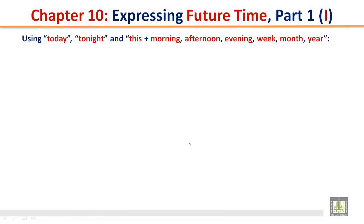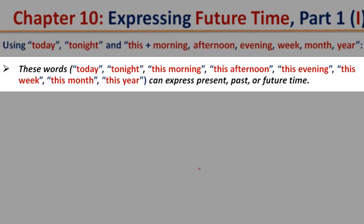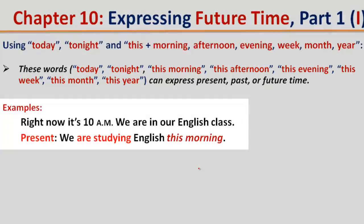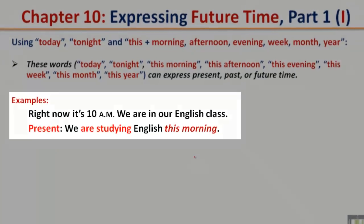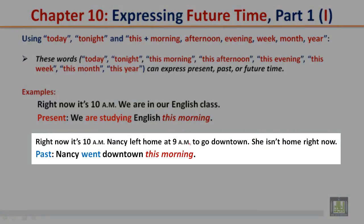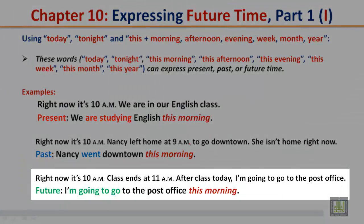Using today, tonight, and this plus morning, afternoon, evening, week, month, or year. These words — today, tonight, this morning, this afternoon, this evening, this week, this month, this year — can express present, past, or future time. Present example (it's 10 a.m.): We are studying English this morning. Past example: Nancy went downtown this morning. Future example: I'm going to go to the post office this morning.